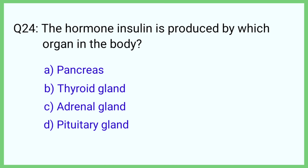Question number 24. The hormone insulin is produced by which organ in the body? The correct answer is option A: Pancreas.